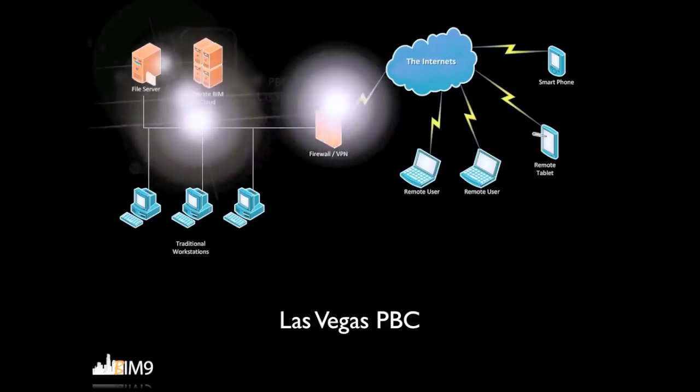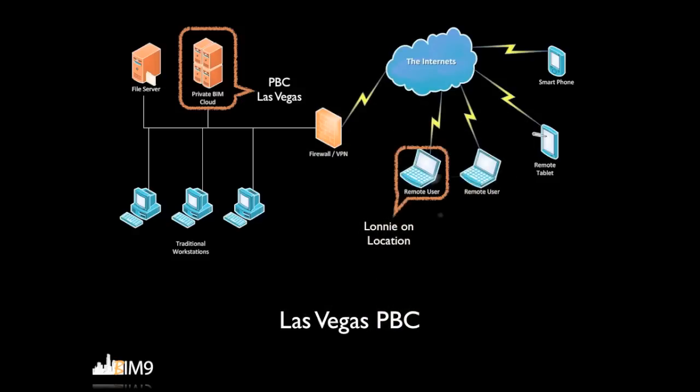Now that we've seen a Private BIM Cloud in action, let's look at what we actually did. In this diagram, we see the remote user accessing via a wireless network to the internet, coming down through a firewall or VPN, connecting to the Private BIM Cloud, and working on a virtual machine sitting on that hardware. Because it's on the network, it has access to the file server just like all other users in the office — so we can all be working on the same Revit project at the same time. Instead of moving the data to the user, we're bringing the user to the data without changing their physical location. Think of it as being connected to the Private BIM Cloud with a really long video cable called the internet.